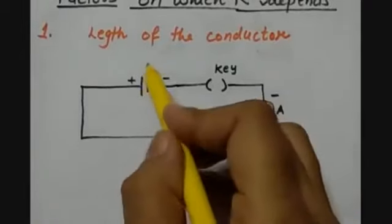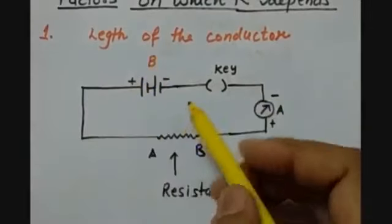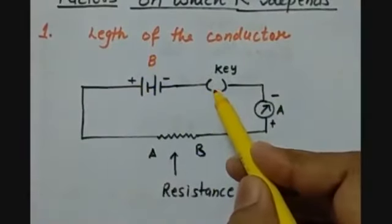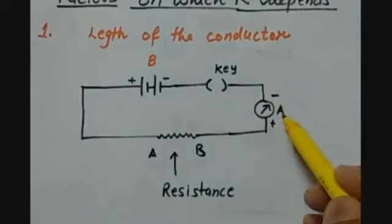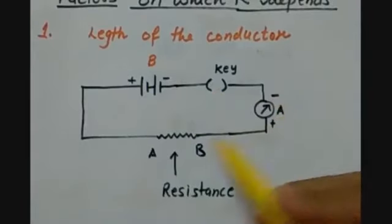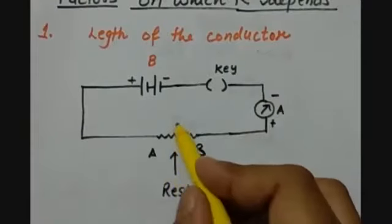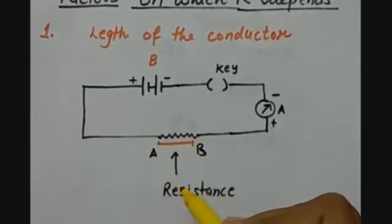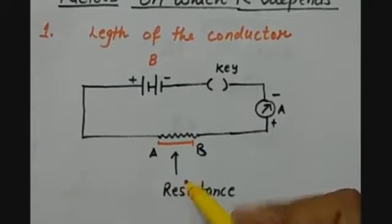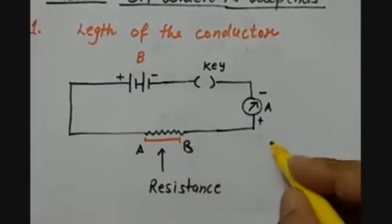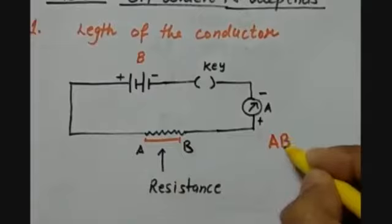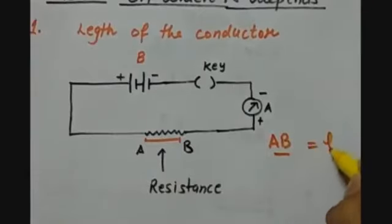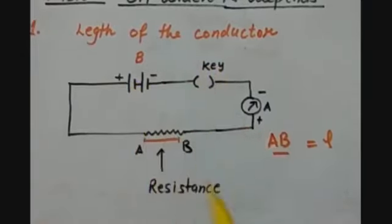Here, this is our battery, and this is the key or the switch — but now this key is open. This is our ammeter, which will measure the current in the circuit. And this is our resistance, or specifically the wire on which we have to see the effect of the length of the conductor. Suppose at the first situation, AB — that is the length of the conductor — is L.